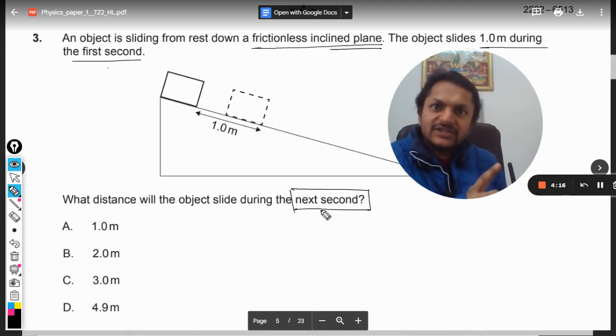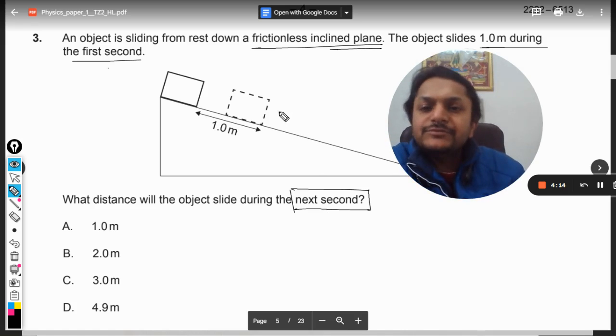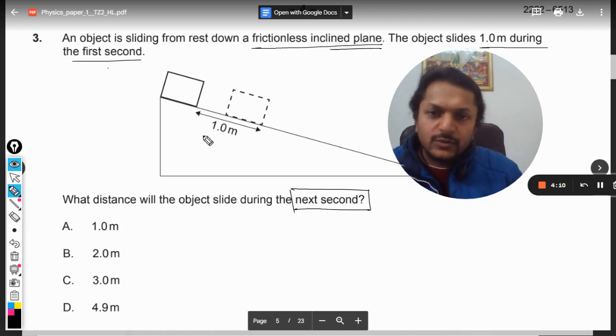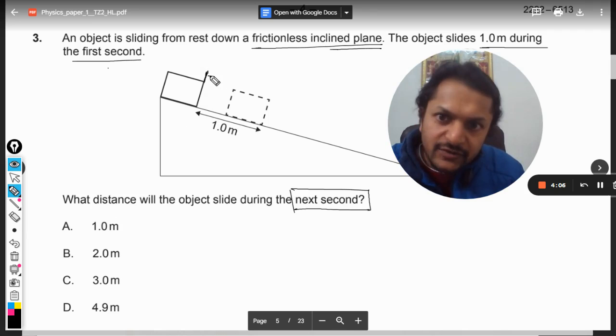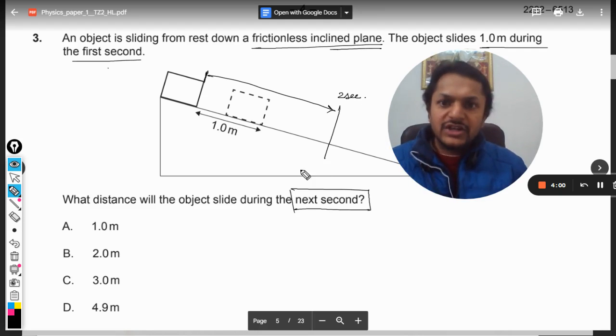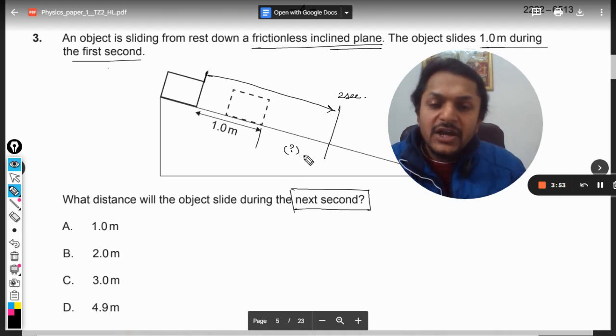So what can we do here? Let us first find the total distance that was traveled in two seconds. Let's say it reached this point after two seconds have been exhausted, but in one second it has reached only this. So we want to find this distance, the distance traveled in the next second. We will subtract s1 from s2.